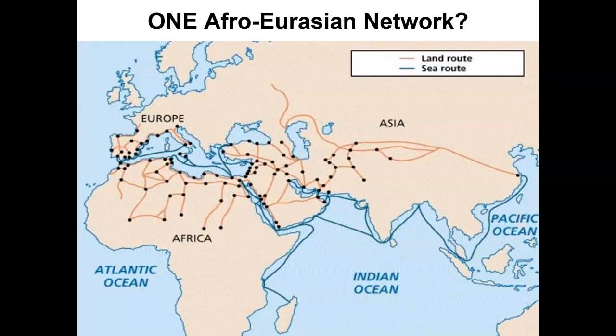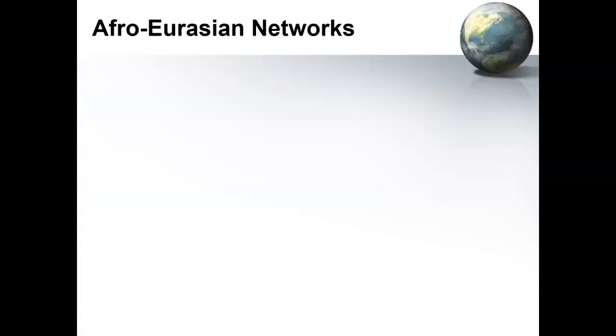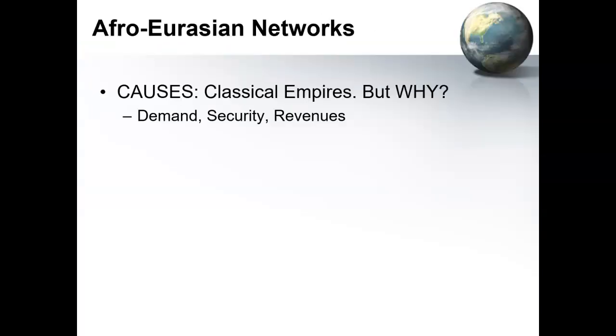We're looking primarily at the effects of the transregional trade networks that develop in Afro-Eurasia up until about 1450. And if you recall what I suggested at the end of the last video, the four separate networks that we had looked at previously, by 1450, essentially become linked up to form one giant Afro-Eurasian network. Now, just a quick review about why that happens.